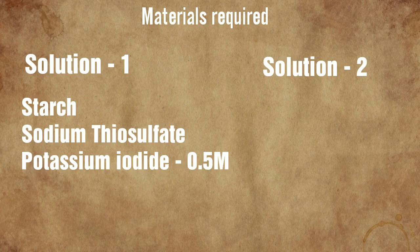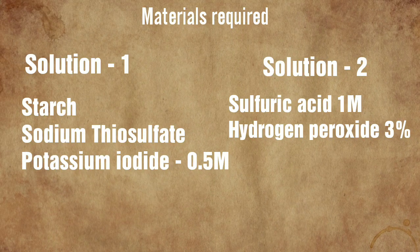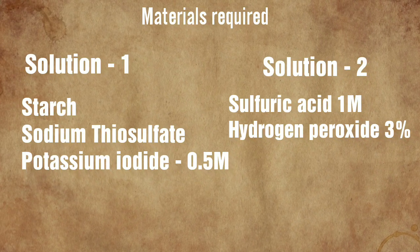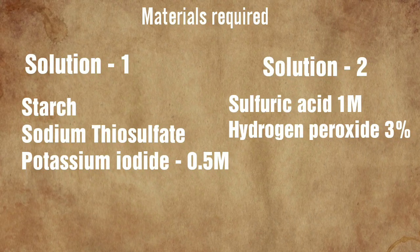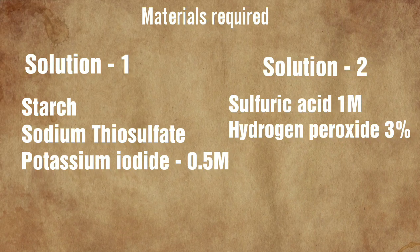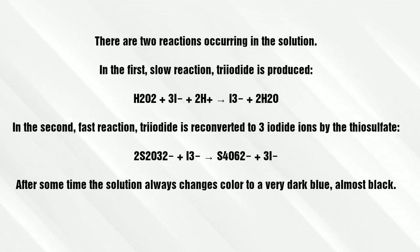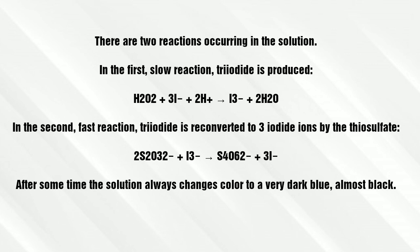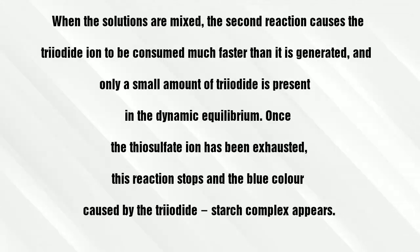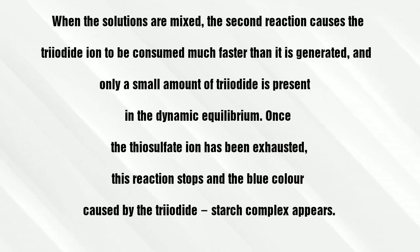Here we will be preparing two clear solutions and then we will mix those solutions. The materials required are given below. This reaction takes place in two steps and the first step is a slow reaction, which is the rate-limiting step. The thiosulphate ions will use up the triiodide formed, and hence starch cannot form a complex with the triiodide.